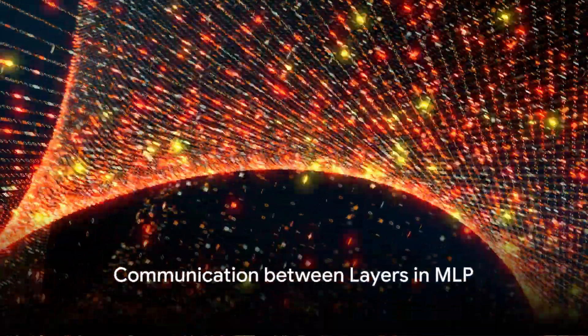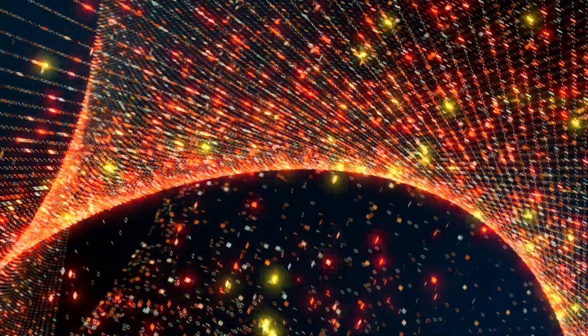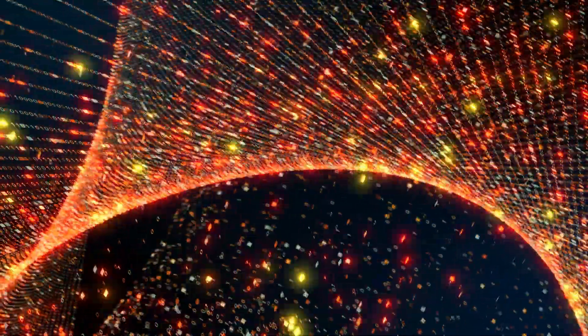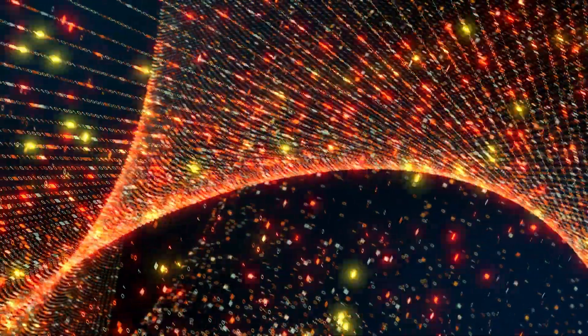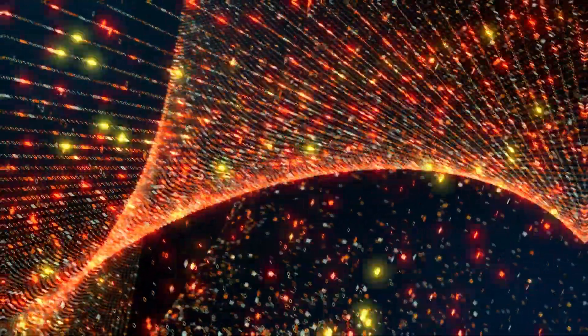But how do these layers communicate? Well, they're interconnected, and they pass information forward through something called weights. These weights are crucial, since they determine how much influence one neuron has on the next.